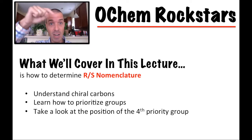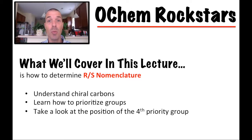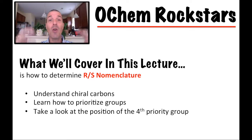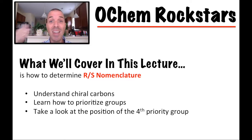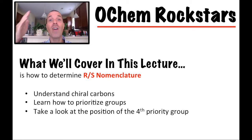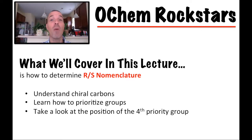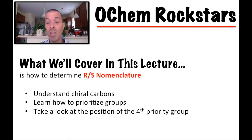What we're going to cover in this lecture is how to determine RS nomenclature. Nomenclature is just naming things — somebody came up with all these different ways of naming molecules. When we talk about R and S, we're talking about stereochemistry-specific naming of stereocenters. We're going to understand chiral carbons, learn how to prioritize the groups one through four, and also take a look at the position of the fourth priority group, which will make a difference as we go through this.